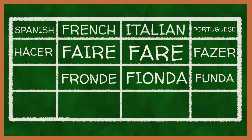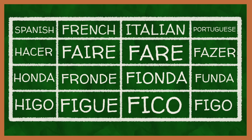Or the word for 'sling', which in French is 'fronde', Italian 'fionda', and Portuguese 'funda' — Spanish, however, goes instead with 'honda'. Then there's also their words for 'fig', which is 'higo' in Spanish, but 'figue', 'fico', and 'figo' in French, Italian, and Portuguese. These are just three examples of this taking place, but there are a ton more out there you can check out for yourself.